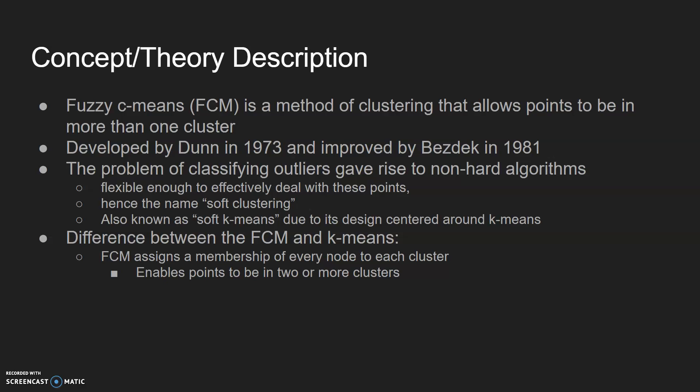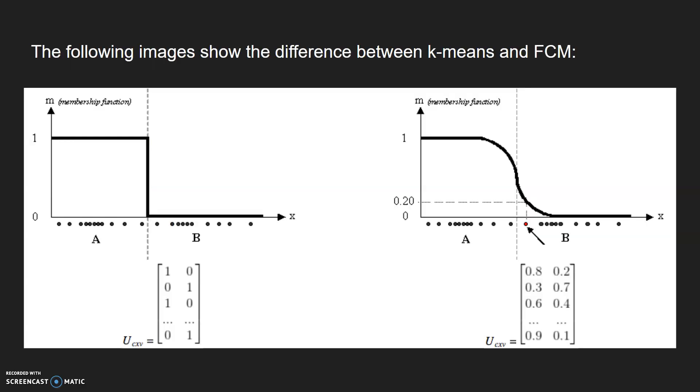These two images side by side show the difference between k-means and FCM. This is k-means and that's fuzzy C-means. As you can tell from the picture, in k-means it's just either zero or one, but in FCM it can be at any decimal value between zero and one, resulting in this curve showing up.